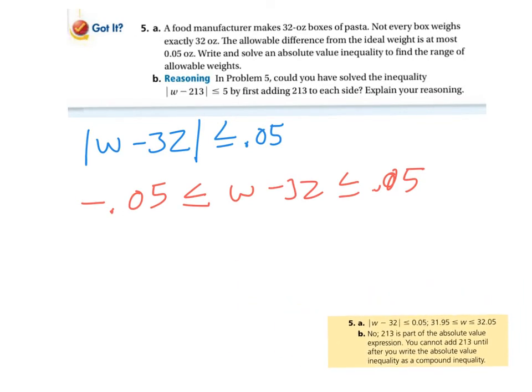And, obviously, in this case, we're going to go ahead and we're going to add 32, add 32, and we're going to find that W is between 31.95 and 32.05. And the label there, obviously, would be in ounces. Second part of that is, in problem five, could you have solved by adding the 213 first? Obviously not, because you're violating the absolute value in that case, and it's going to yield an answer that doesn't make a lot of sense. It'll give you half the answer.